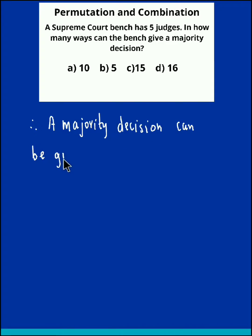5C3 ways or 5C4 ways or 5C5 ways. So if we simplify this, this could be written as 5×4×3 divided by 3×2×1, plus